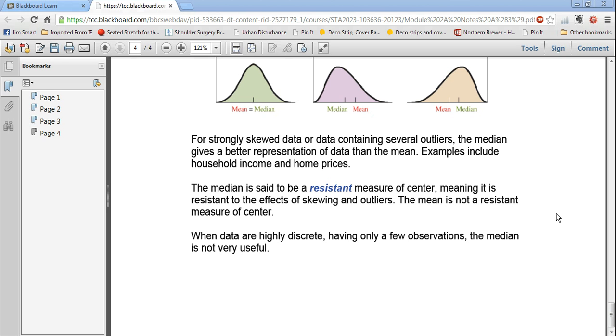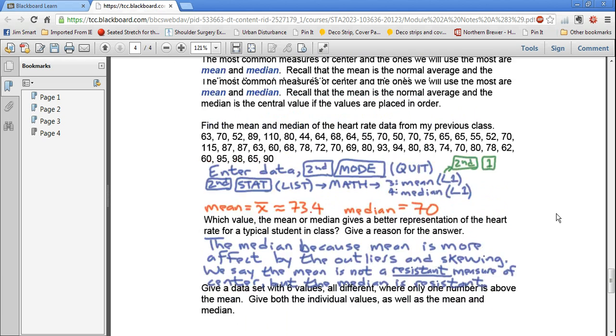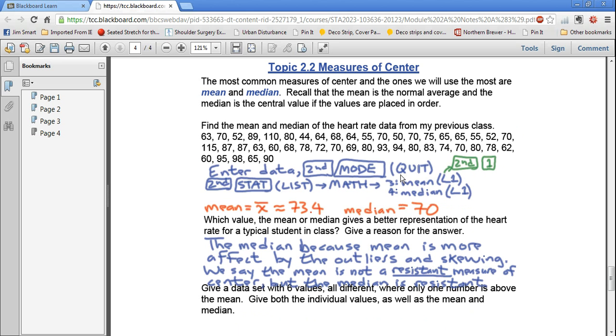In this first set of notes from Module 2, the Topic 2.1 and 2.2 notes, you'll find that there is some instructions on how to find the median and the mean, and they're actually quite useful in certain situations. But in the second set of notes from Module 2, there's actually another way, which is nice because it gives you all of the summary statistics with just one function.